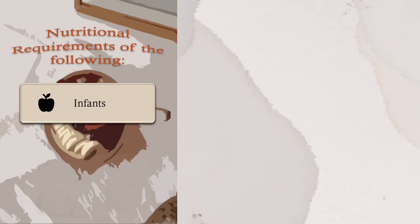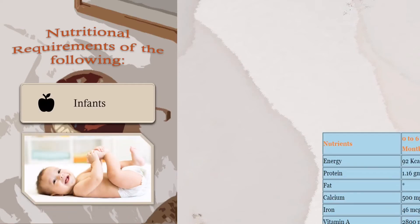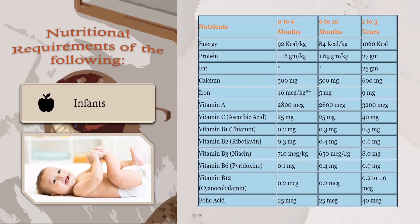Nutritional requirements of the following — Infants: The nutrients needed for infants include energy, protein, calcium, iron, vitamin A, vitamin C (ascorbic acid), vitamin B1 (thiamine), vitamin B2 (riboflavin), vitamin B3 (niacin), vitamin B6 (pyridoxin), vitamin B12 (cyanocobalamin), and folic acid. The side tables show the RDA for ages 0 to 6 months, 6 to 12 months, and 1 to 3 years.